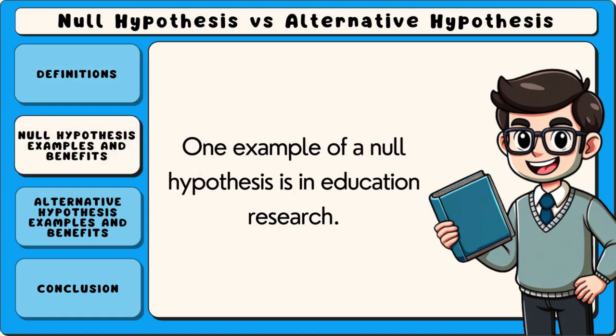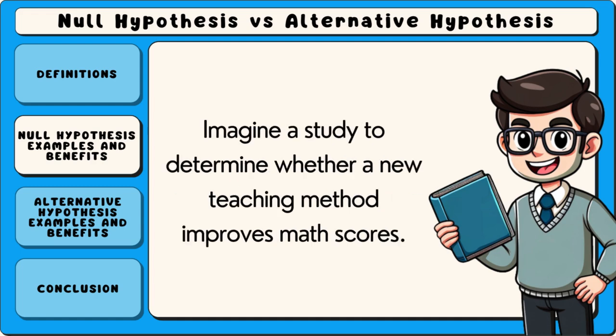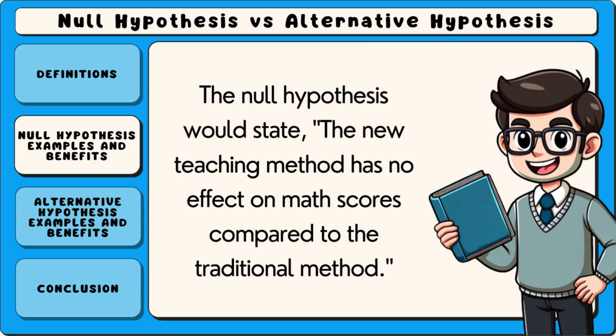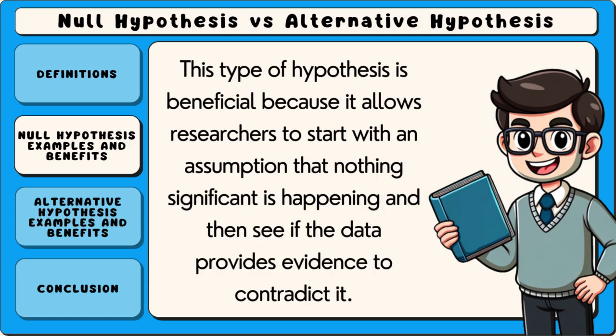One example of a null hypothesis is in education research. Imagine a study to determine whether a new teaching method improves math scores. This type of hypothesis is beneficial because it allows researchers to start with an assumption that nothing significant is happening and then see if the data provides evidence to contradict it.